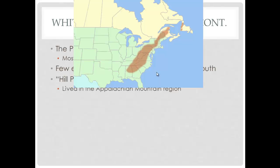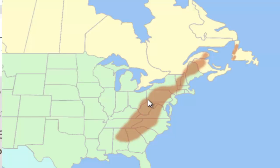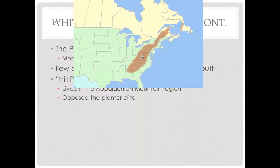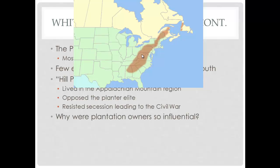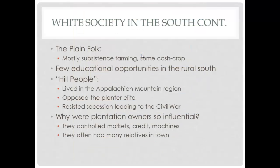The hill people lived in the Appalachian Mountain region, especially what became West Virginia, which was part of Virginia before the Civil War. They opposed the planter elite, and as the country moved toward secession, this area resisted — West Virginia was created during the Civil War as a Union state. Plantation owners were influential despite being few in number because they controlled money, markets, credit, and machines, and often had many relatives scattered throughout rural towns.